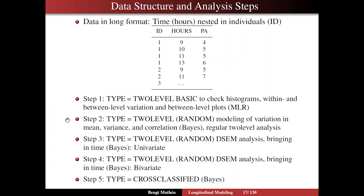That's also going to use the Bayes estimator. I'm going to start with a univariate analysis, which I think is useful to understand how the data behaves before we go into complex models, as in step 4, where we do the same type of analysis but for the bivariate case — so bringing in more variables, then going multivariate if that's called for. And finally in step 5, turning to type equals cross-classified analysis, cross-classified DSEM instead of two-level DSEM, still using the Bayes estimator.